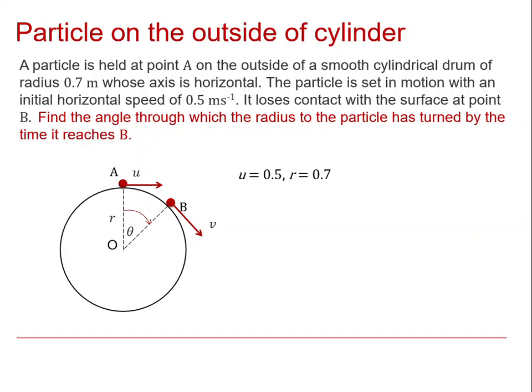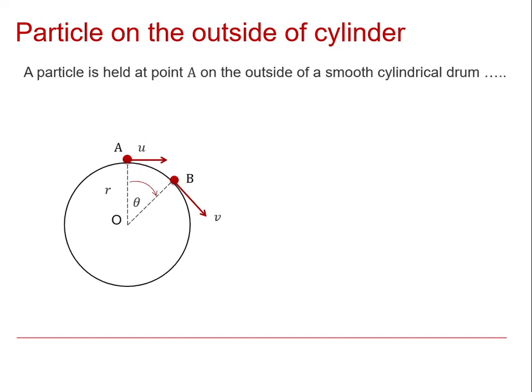So first we need to think about the force diagram. What will the force diagram at B look like? There will be a normal reaction from the drum which will be along the radius. There will be a weight force which will be vertical, and there will be an acceleration towards the centre. There's the acceleration towards the centre, the speed at B, the normal reaction, and the weight.